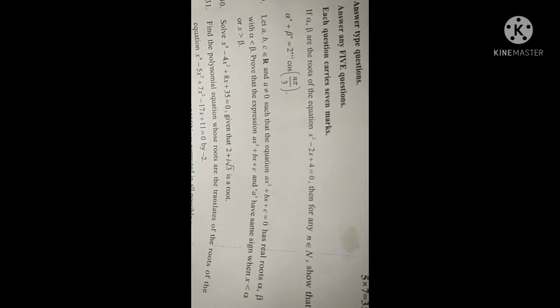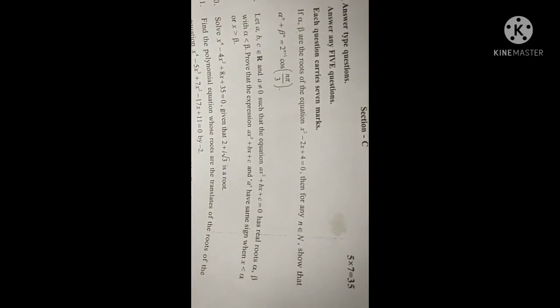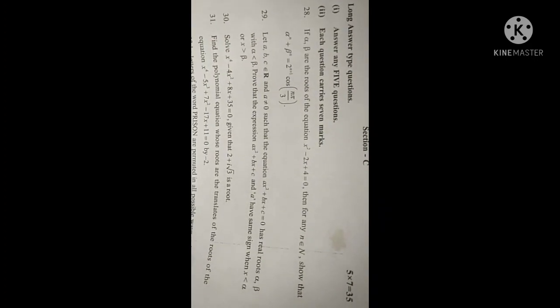So 12 questions are there, in this 12 if you write only 5, those are enough. If you know more than 5, we can write in the exam. Next, 28th onwards, 7-mark questions. Question 28: If α, β are the roots of x² - 2x + 4 = 0, then prove for any n ∈ N that α^n + β^n = 2^(n+1) cos(nπ/3).